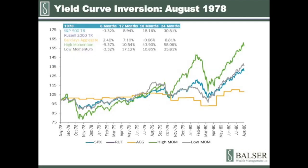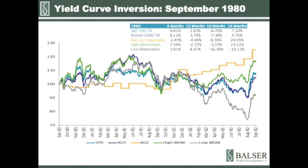Let's take a walk back to August of 1978. The yield curve inverted in August of 1978 began with a quick sell-off and high momentum was hit very, very hard. Once that sell-off was complete, all of the indexes except for bonds performed very well. This looked like more of a sharp correction and rebound rather than a recession-induced bear market. Please note, I don't have Russell 2000 returns for this time period.